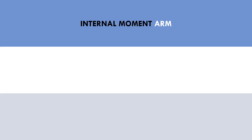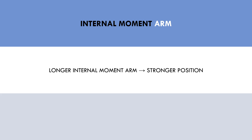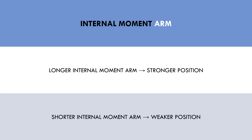The second factor which influences tension curves is the internal moment arm. This refers to the position of the muscle attachment relative to the joint. At different portions of each lift, the internal moment arms change. To briefly summarise, when we have a longer internal moment arm, the lift becomes easier, and a shorter internal moment arm makes the lift harder. This is specific to the anatomy of each muscle and its attachment sites.